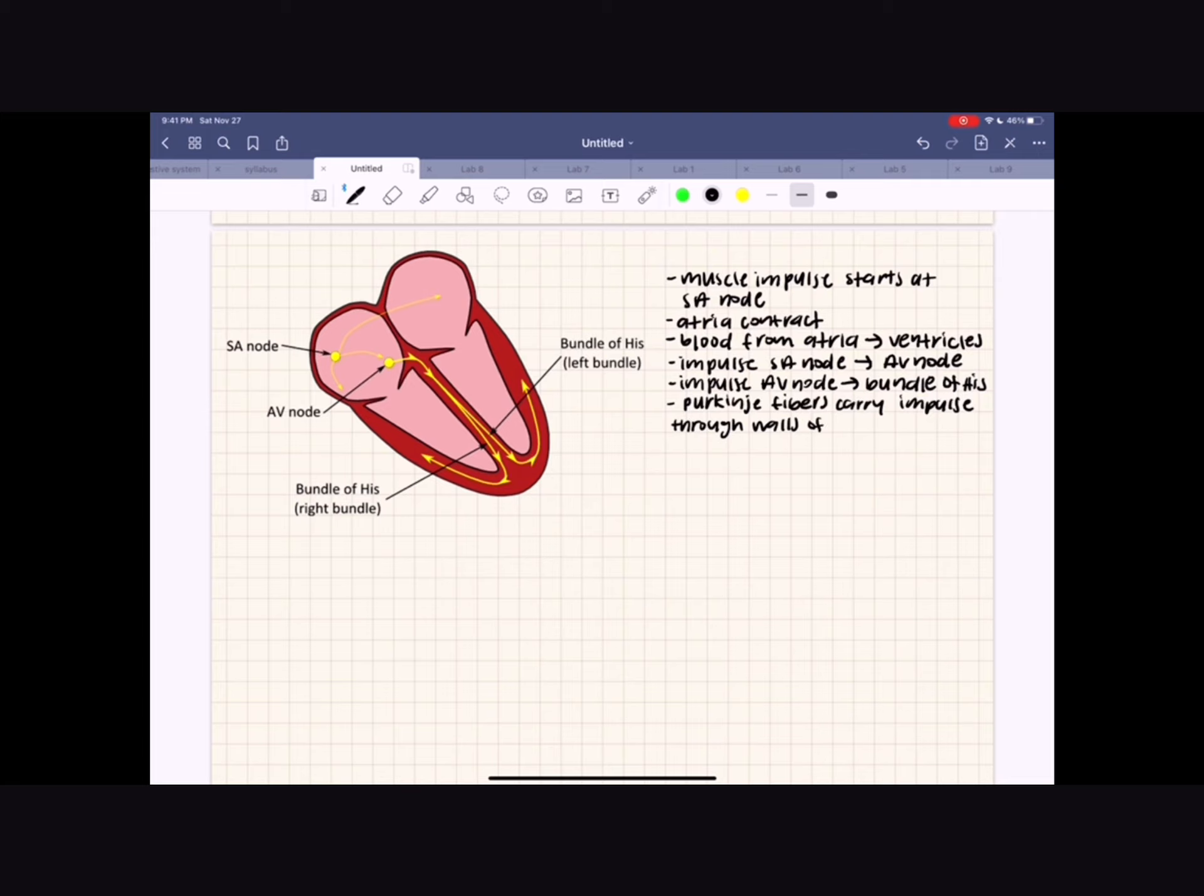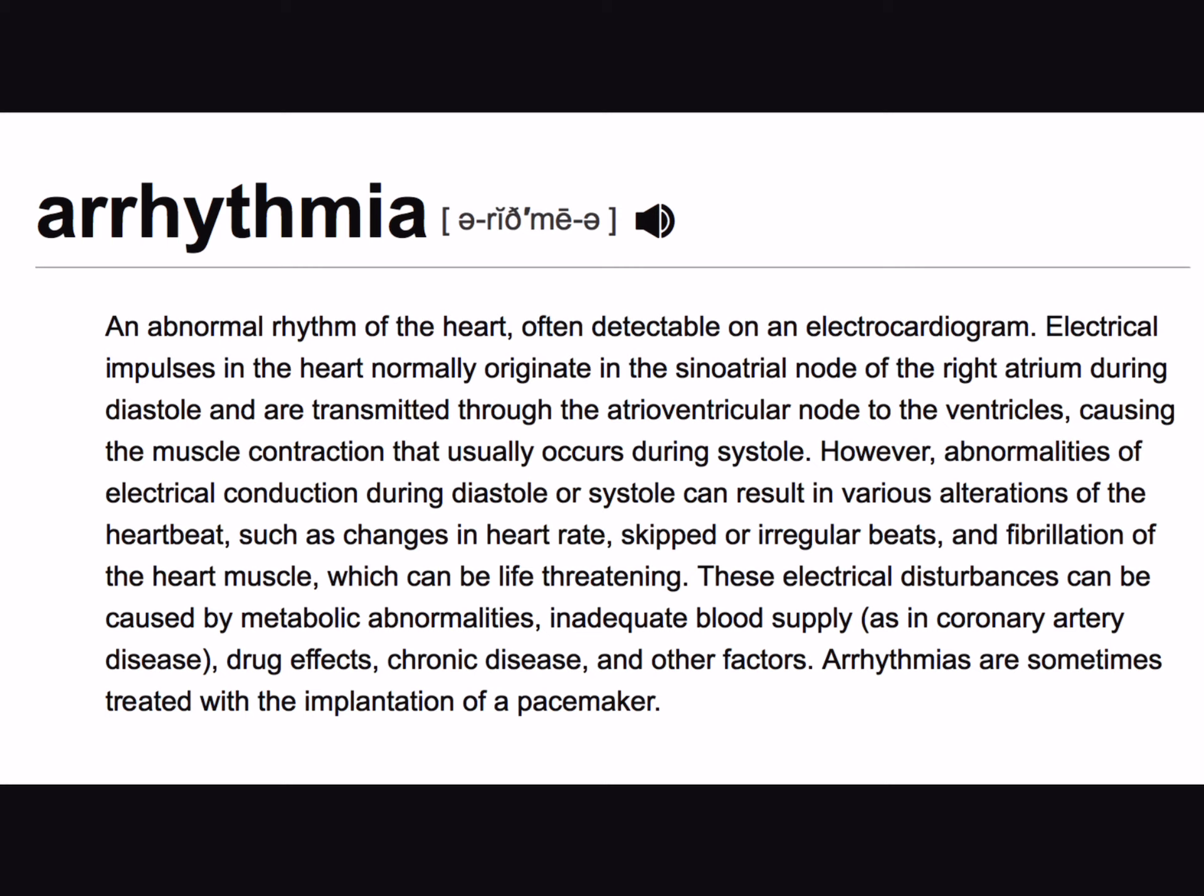The conduction system is almost foolproof, allowing the heart to pump blood throughout the body for your entire life. But as with any part of the body, issues can arise. Heart arrhythmia is an irregular heartbeat caused by the error in one or more of these conduction steps. This system can malfunction in different ways, each of which is associated with its own abnormal functions.